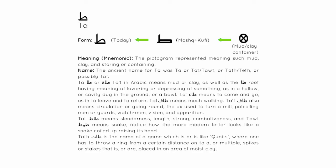In summary: Ta'a. Form — the original pictogram for Ta'a seems to be of a container made out of mud or clay. Meaning — the pictogram represented meanings such as mud, clay, and storing or containing. Name — the ancient name for Ta'a was Ta'a, or Taat, or Taot, or Taoth, or Taith, or possibly Taaf. Ta'a alif or Ta'a alif ta' marboota in Arabic means mud or clay, and the Ta'a alif ta' root carries the meaning of lowering or depressing of something, as in a hollow or cavity dug in the ground or a bowl.